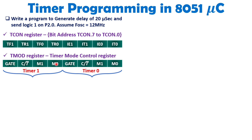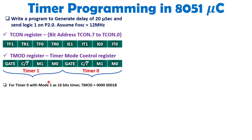Keep all Timer 1 bits as 0 and focus on Timer 0. I want to operate in Mode 1, so I set M1 and M0 as 0 and 1 respectively. I am configuring Timer 0 in Mode 1. By keeping GATE as 0, I am not using an external trigger for initiation of count. Mode 1 means 16-bit timer, so I load TMOD with all zeros and a last bit of 1, making Timer 0 operate in 16-bit mode.